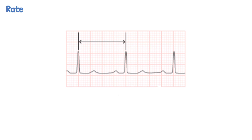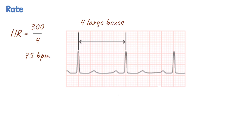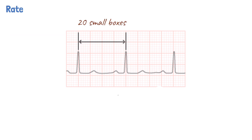For example, in the ECG shown, there are 4 large squares between each R wave. Therefore, the heart rate is 300 divided by 4, which gives 75 beats per minute. Alternatively, we can count the number of small squares between each consecutive R wave and then divide 1500 by this number. For example, in the ECG shown, the heart rate would be 1500 divided by 20, which gives 75 beats per minute.